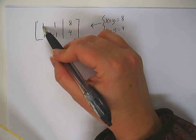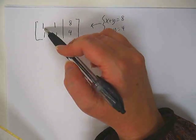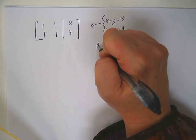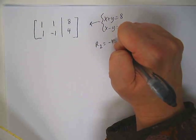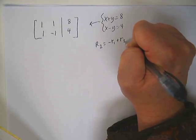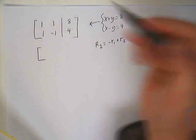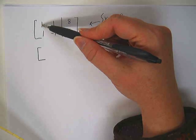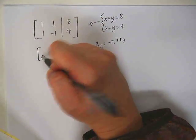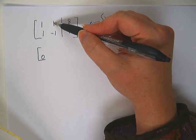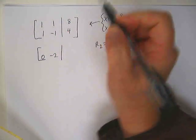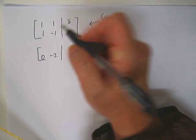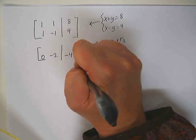Okay, so now we already have the 1 in that corner, so we don't have to multiply by anything to get that. We want a 0 here, so we're going to make a new row 2 by taking row 1, multiplying it by a negative, and adding it to row 2. So, 1 plus, or negative 1 times 1 is negative 1 plus 1 is 0. Negative 1 times 1 is negative 1 plus negative 1 is a negative 2. And negative 1 times 8 is negative 8 plus 4 is a negative 4.